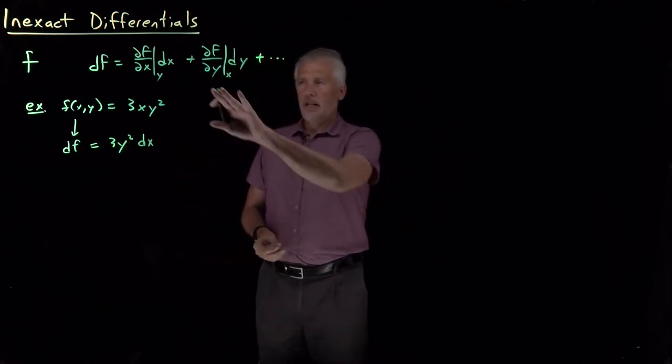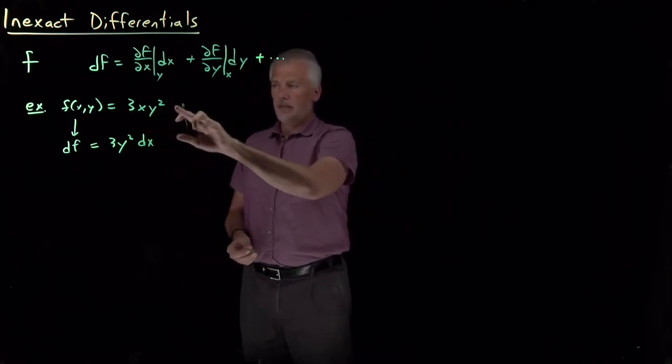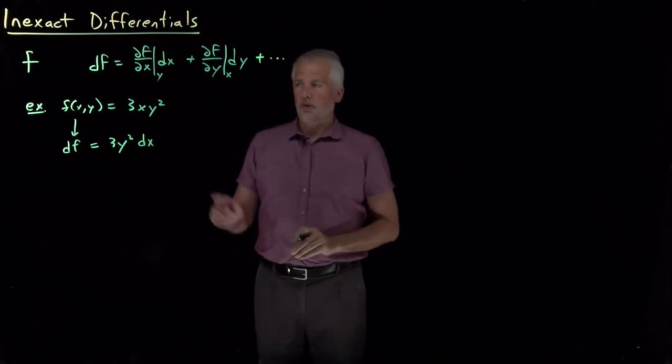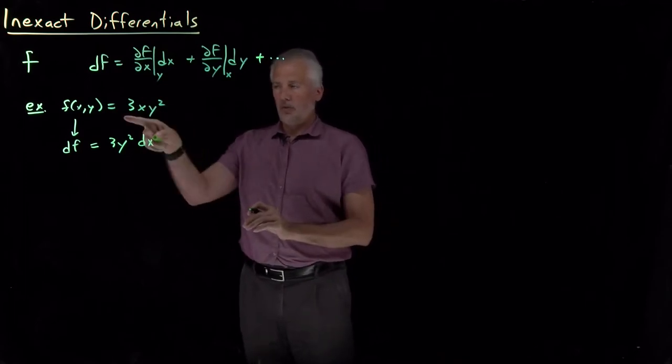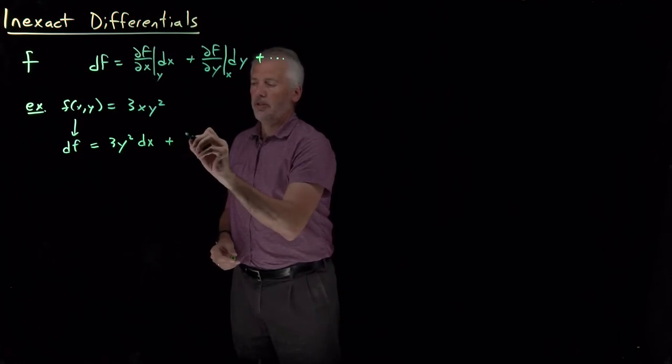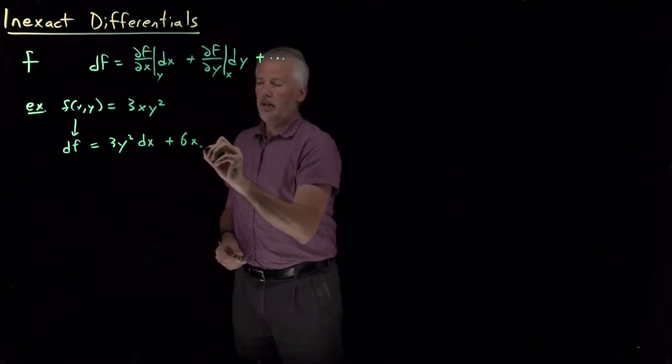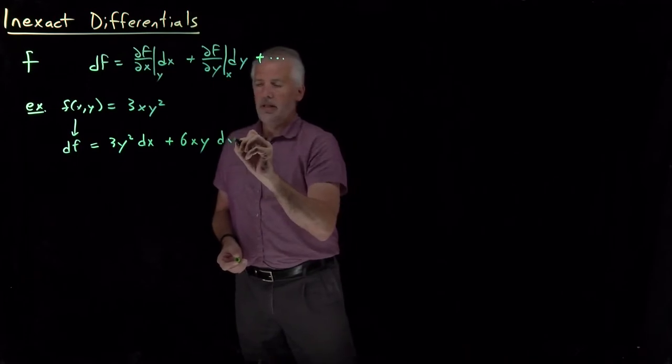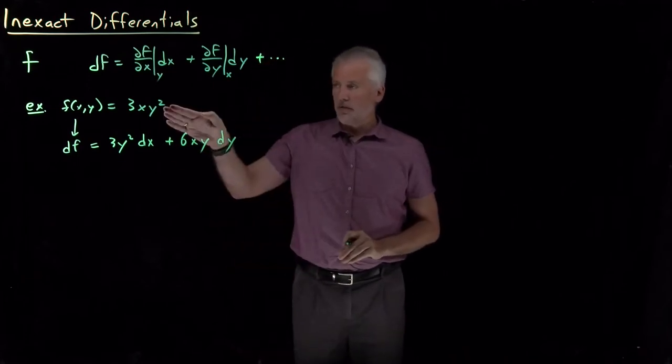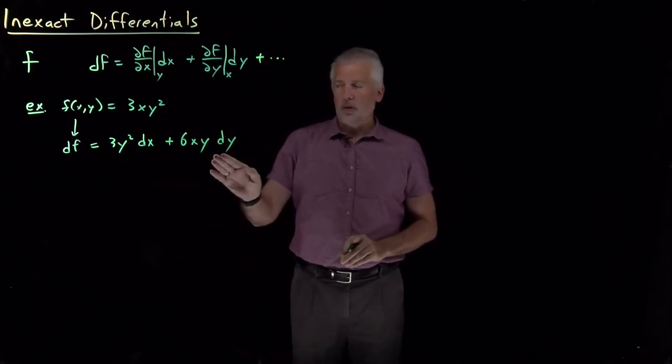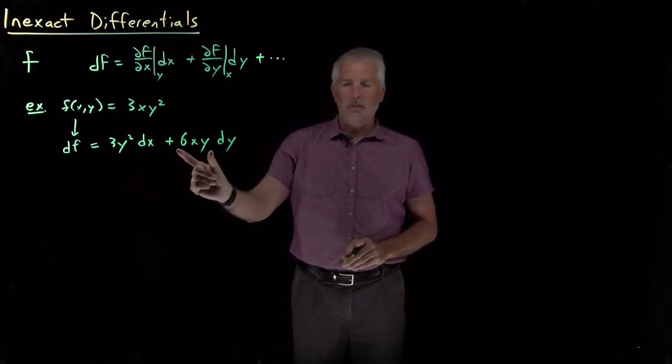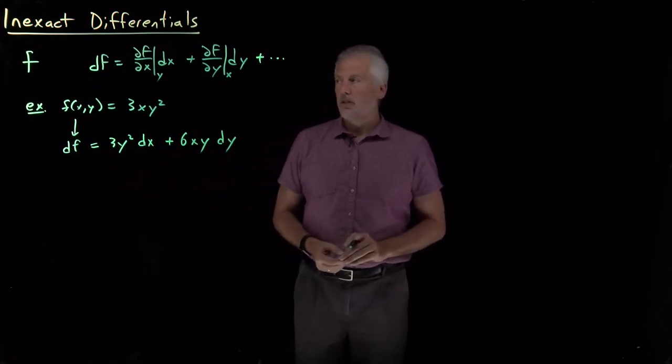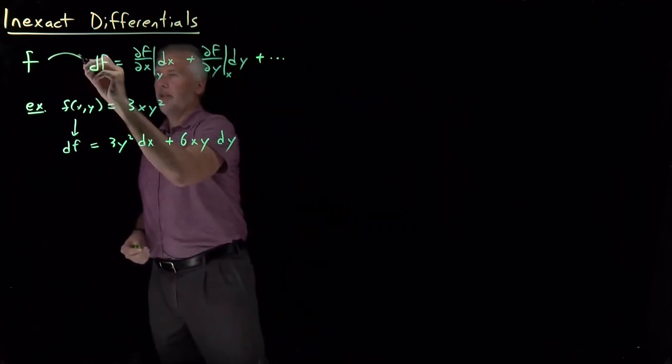And then likewise for y, the partial derivative of this function with respect to y. y² gives me a 2y as a derivative, so now I end up with 6. We still have an x and one factor of y now, and that's multiplying dy. So the differential of this expression is this quantity. Some amount in response to a change in x, a different amount in response to a change in y. So we've gone in this direction.